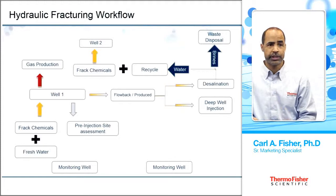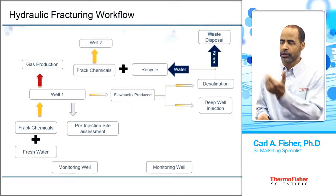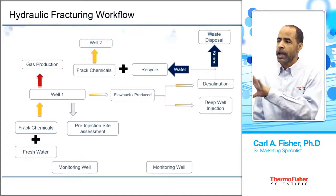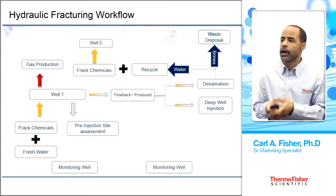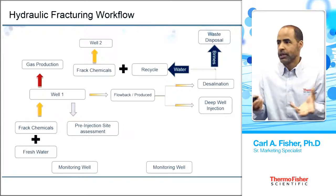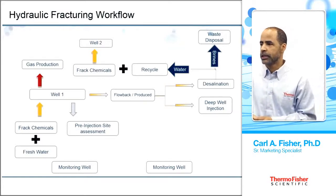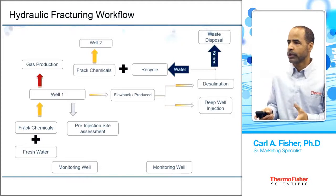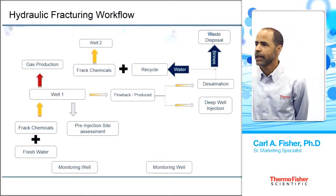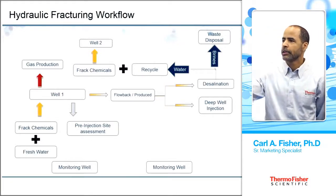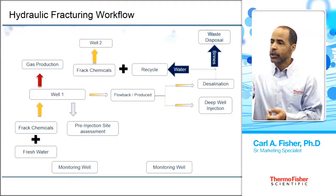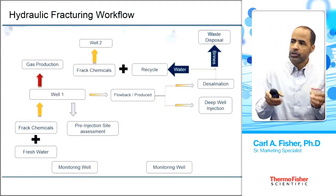Typically the fresh water is going to be really clean and pristine, and that's used for the first well. A fracturing event occurs, you get gas or oil production, and then you have waste generated. You're going to have flow back or produced water coming up. That can be quite expensive to dispose of — one way is deep well injection. Another, increasingly common approach is recycling: the water is desalinated, producing a brine that is easier to dispose of, and the recycled water can be used for another fracturing event.